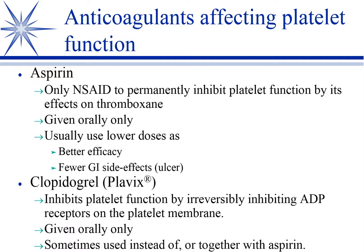The reason is that you normally have a balancing act between platelets activated by thromboxane and the endothelium of the vessel releasing prostacyclin, which is a natural anticoagulant. So you've got an endogenous coagulant and an endogenous anticoagulant. When you give aspirin, the unique thing is that it permanently inactivates cyclooxygenase.